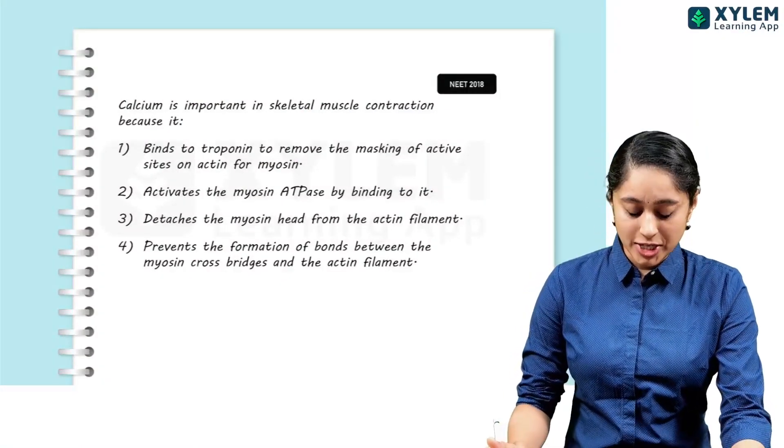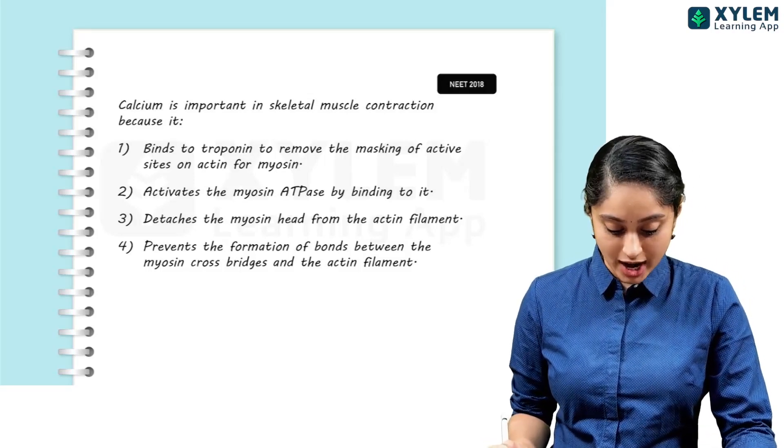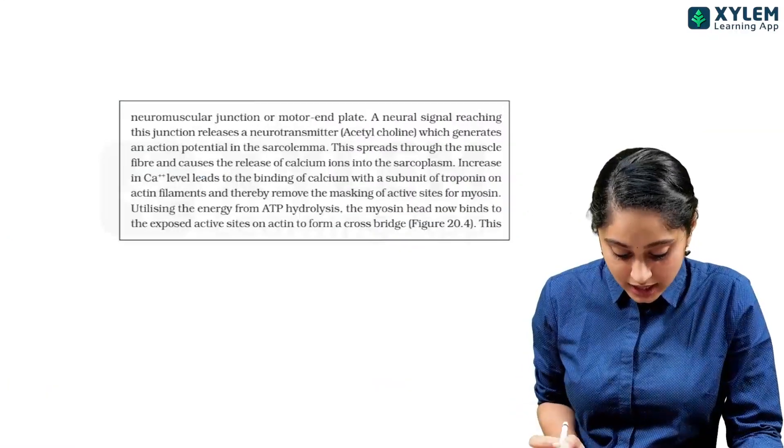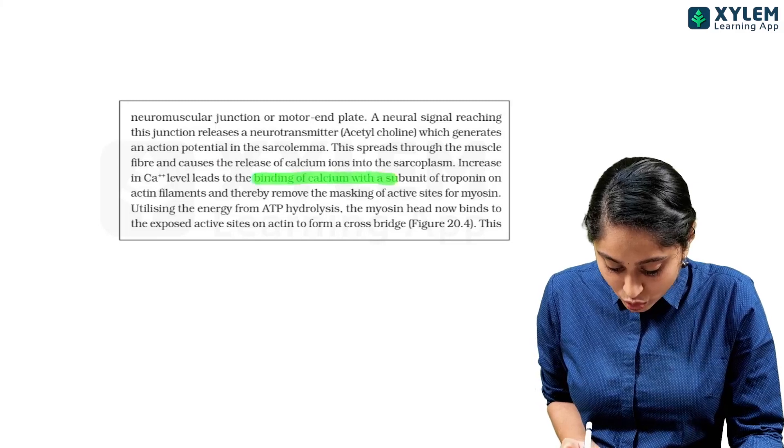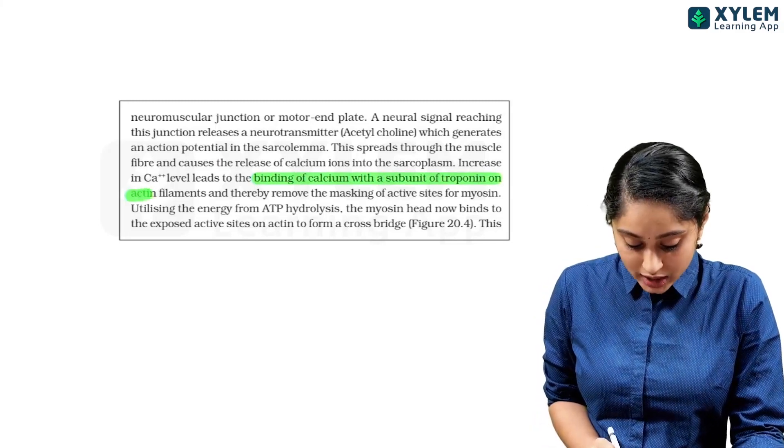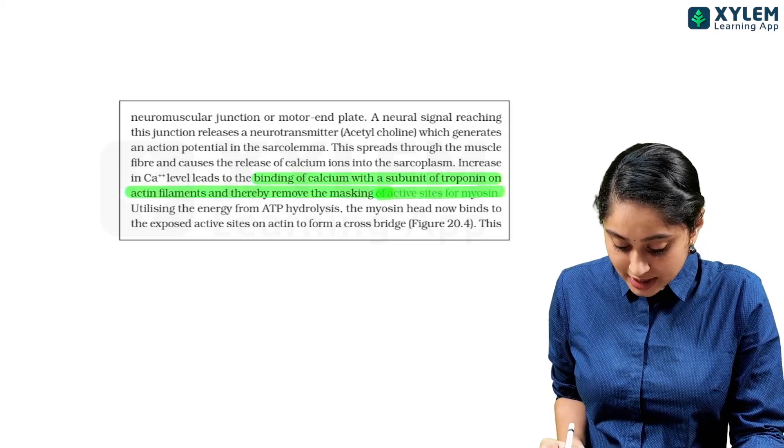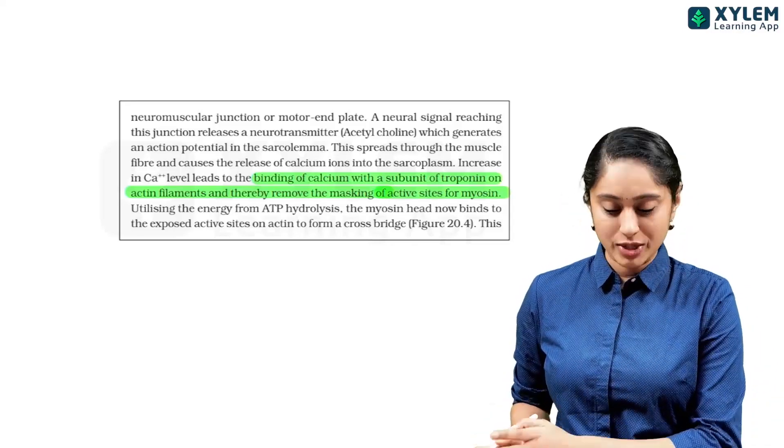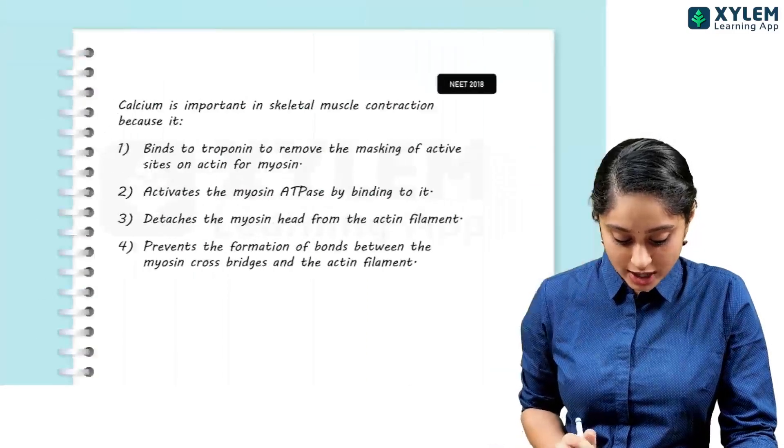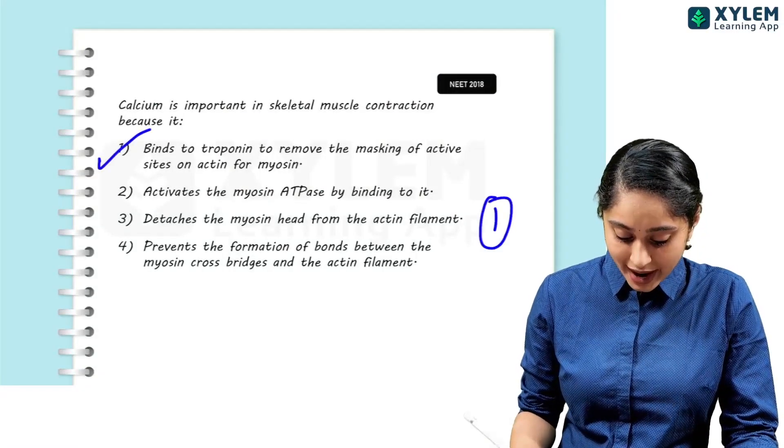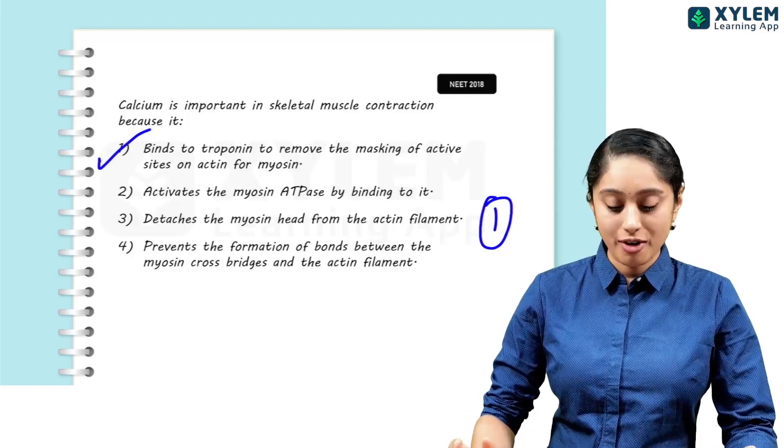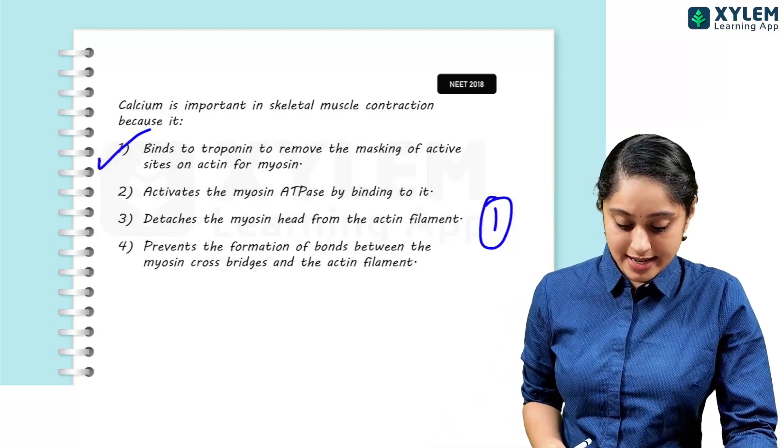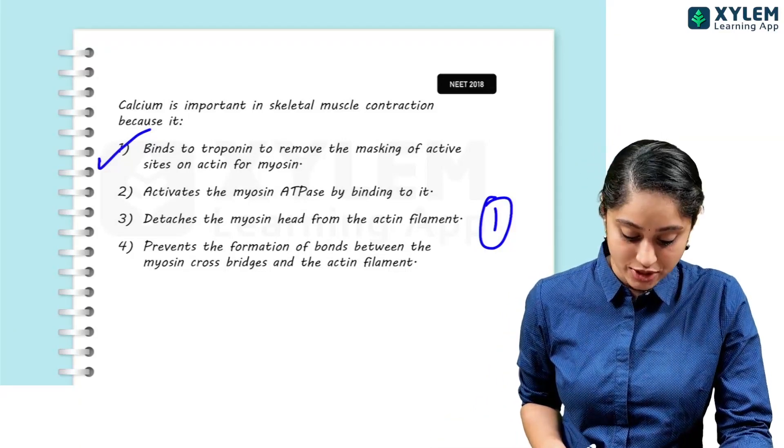Then 2018 question: Calcium is important to skeletal muscle contraction because it will bind to a subunit of troponin on the actin filament and will remove the masking of active sites for myosin. So it is a very important component of muscle contraction. Here clearly option 1, it binds to troponin to remove the masking of the active sites on actin for the myosin. That will be the right answer.